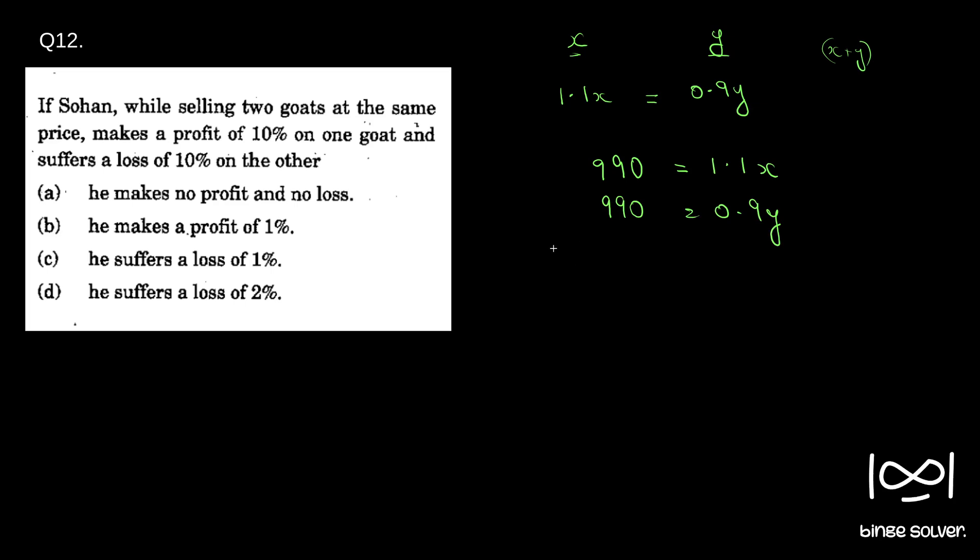So now we can easily find x. x is nothing but 990 by 1.1, or this can be written as 11 by 10, right? So this becomes 90, so we get x as 900. Similarly, y, if you find out 990 by 0.9, 990 by 9 into 10, so we have 1100 as our y.